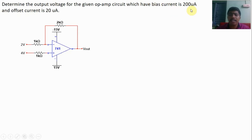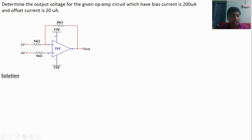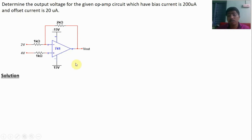In this problem, bias current is 200 micro ampere and offset current is 20 micro ampere. For the ideal case, the current flowing through the minus terminal and plus terminal are both zero, but in the practical case, there is some current flowing toward the minus terminal and plus terminal.